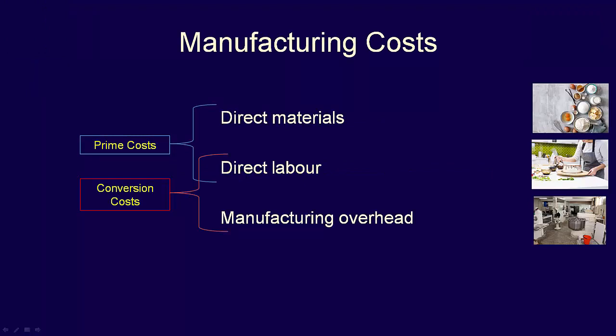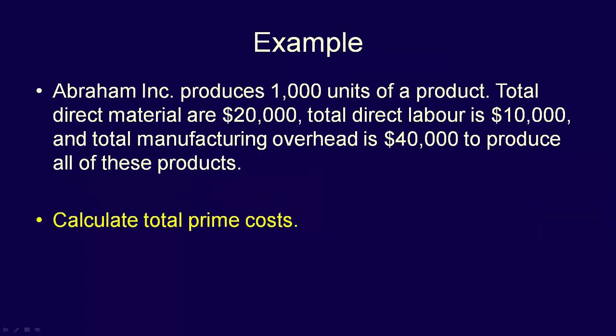So this is just a different way of grouping the manufacturing costs based on what those costs represent. Let's do a quick example. Abraham Inc. produces 1,000 units of a product. Total direct materials are $20,000, total direct labour is $10,000, and total manufacturing overhead is $40,000.